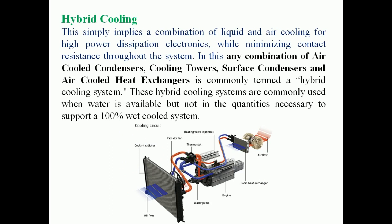Hybrid cooling uses a combination of two or more cooling systems. It combines liquid and air cooling for higher power dissipation in electronics while minimizing contact resistance throughout the system. Any combination of air-cooled condensers, cooling towers, surface condensers, and air-cooled heat exchangers is commonly termed a hybrid cooling system. These systems are commonly used when water is available but not in quantities sufficient to support a 100% wet-cooled system.